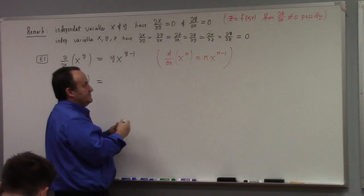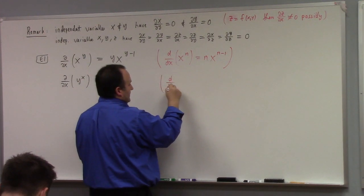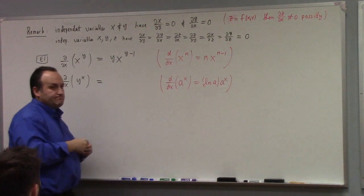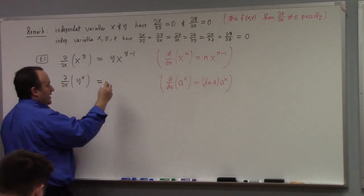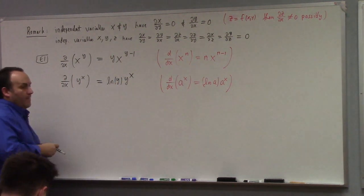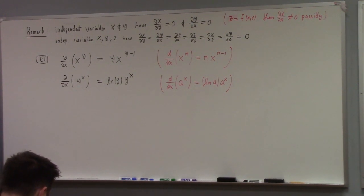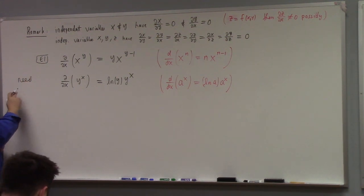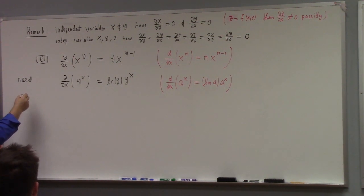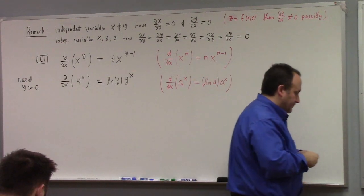How about the next one — the partial with respect to x of y to the x? This is more like d/dx of a to the x, which is natural log of a times a to the x. So here I have natural log of y times y to the x. I need some terms and conditions — what condition do I need? We need y positive, otherwise we can't take the log.